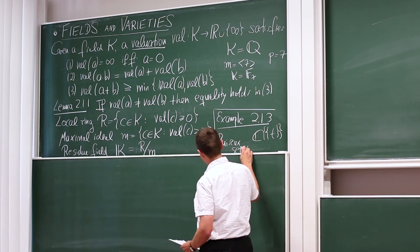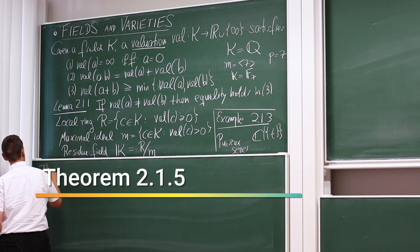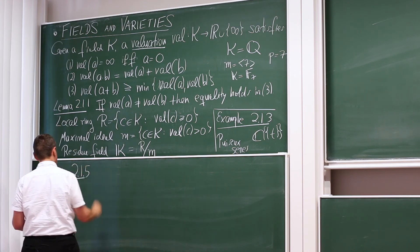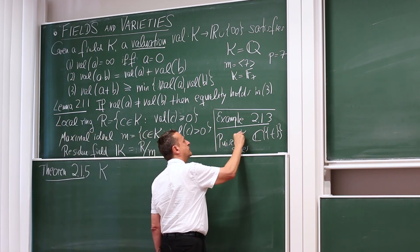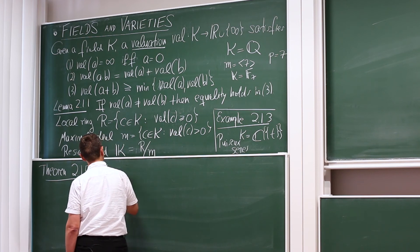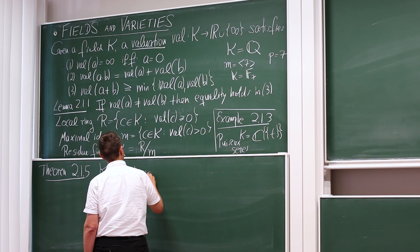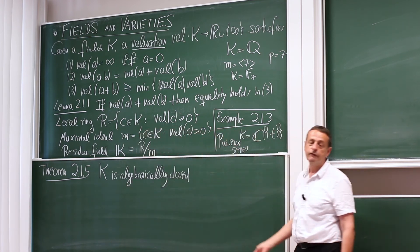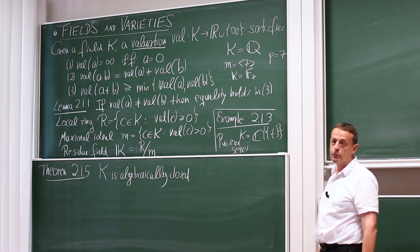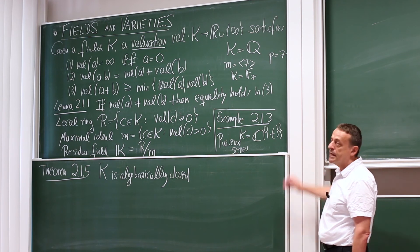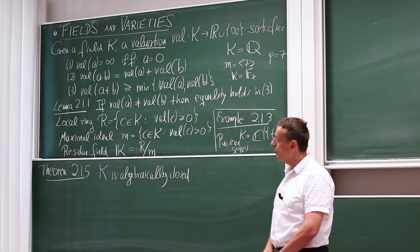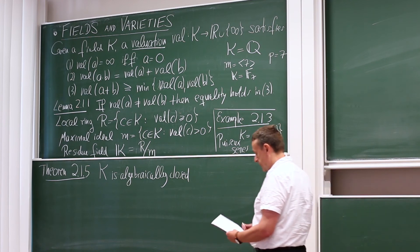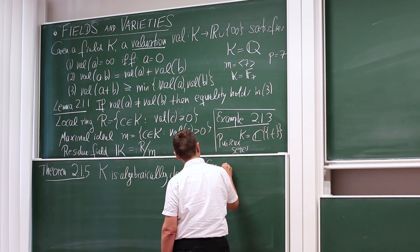Now, an important fact about the Puiseux series, that's one of the reasons why we like them so much, is theorem 2.1.5, which says that k, this field of Puiseux series, is an algebraically closed field. So it's an algebraically closed field with a non-trivial valuation. The residue field here is just the complex numbers, so both the field and the residue field have characteristic 0. And algebraically closed means that any polynomial in one variable with coefficients in k has a root in k, and then in fact has degree many roots, counting multiplicity. So for example, this means we can solve equations.